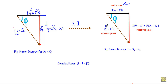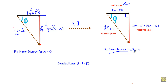The real power and reactive power components combine to form the apparent power equal to V·I or I²Z. Reactive power creates a right angle with the real power axis, forming the power triangle when XL is less than XC.